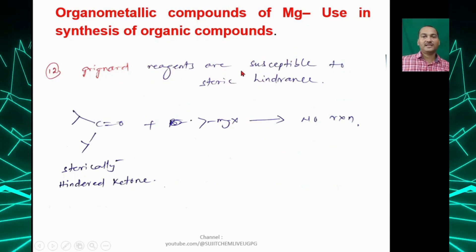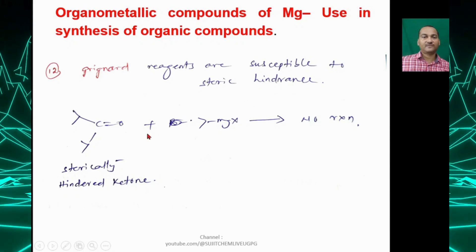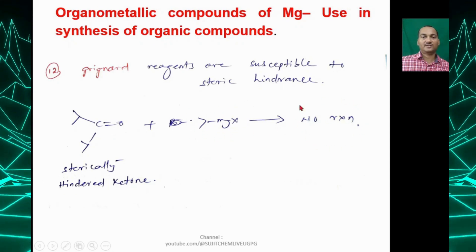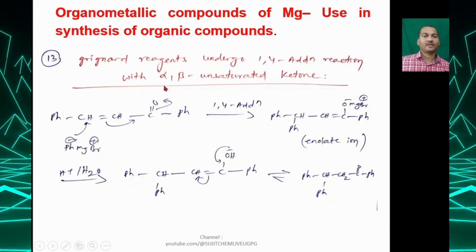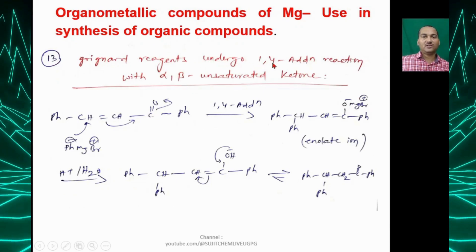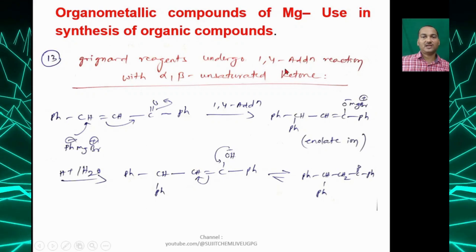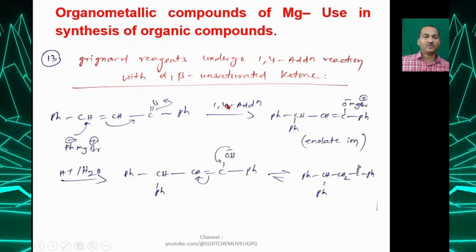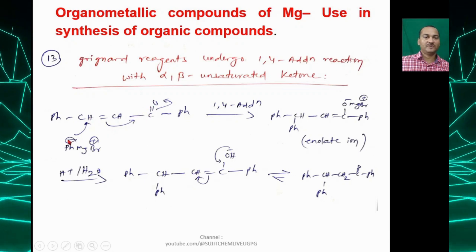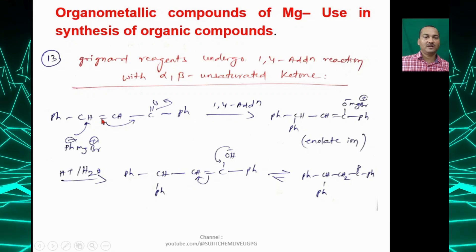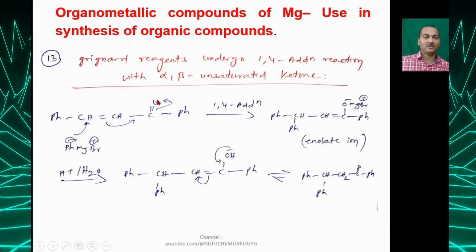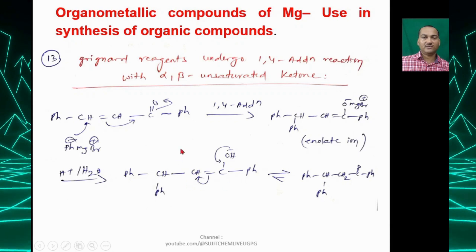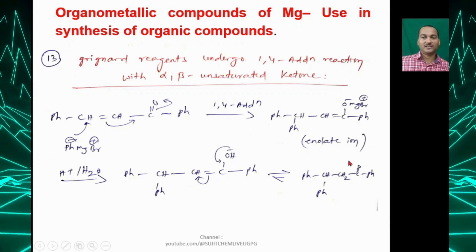Grignard reagents are susceptible to steric hindrance: with a sterically hindered ketone, there would be no reaction. Grignard reagents undergo 1,4-addition with α,β-unsaturated ketones: the Ph⁻ attacks carbon-4, the π bond moves, and the double bond breaks on oxygen to give a 1,4-addition enolate anion. Upon hydrolysis you get the enol, which tautomerizes to give the ketone.